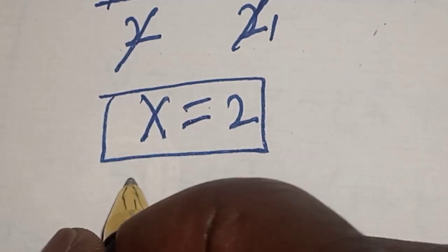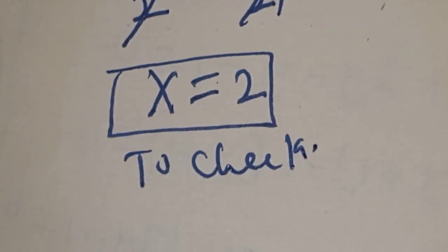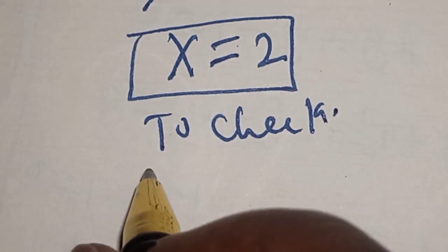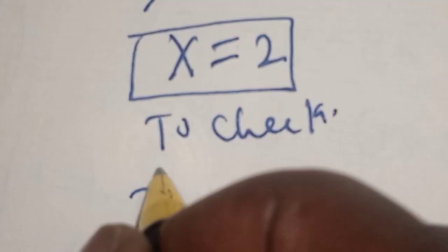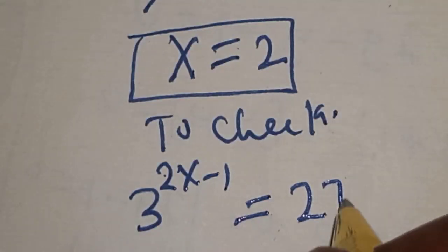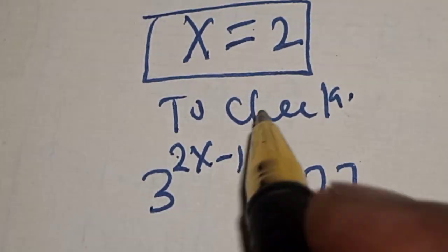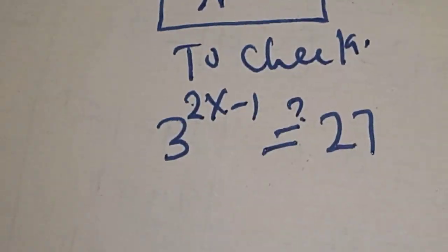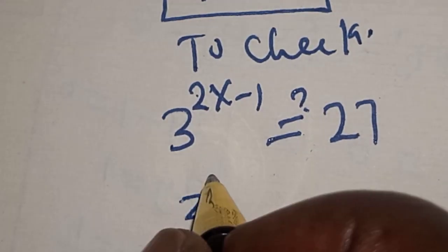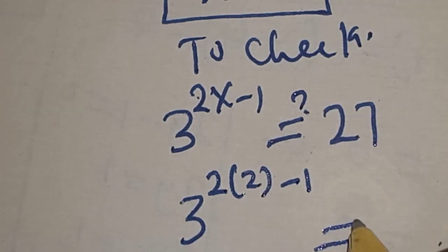To check, we have the given question: 3 raised to power 2s minus 1 must equal 27. Now at s equals 2, we have 3 raised to power 2 into 2 minus 1 must equal 27.